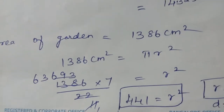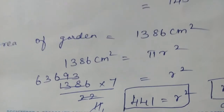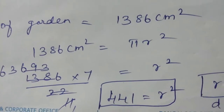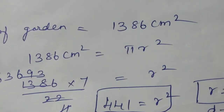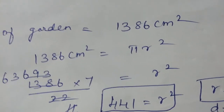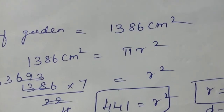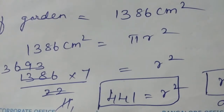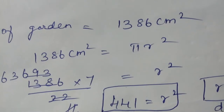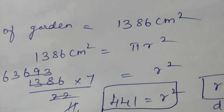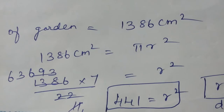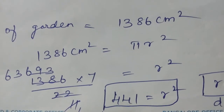The area of the garden is given as 1386 centimeters squared, and we have to find the radius. Substitute in the formula: 1386 equals pi r squared. We need to isolate r, so pi moves to the left-hand side.